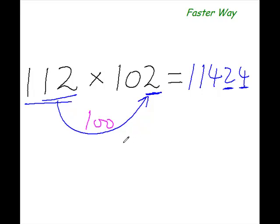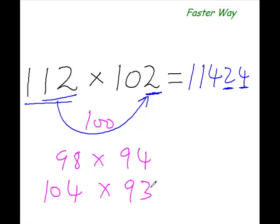That is, when both the numbers are below the base, like 98 times 94, they are both below the base 100. And when one number is above and one number is below the base, let's say 104 times 93. This is above the base, this is below the base. So we'll be practicing all these types of examples. The method remains almost the same.